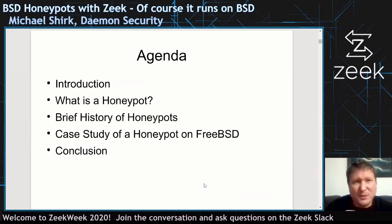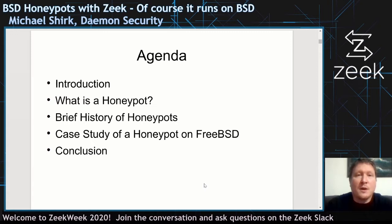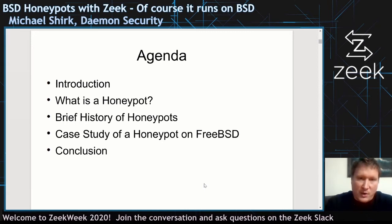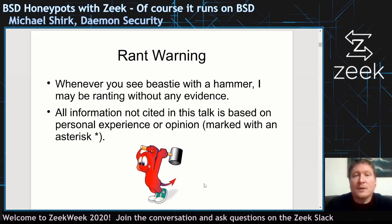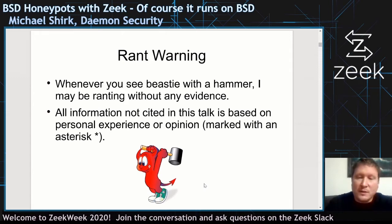I'd like to start off with a basic introduction, then work into what is a honeypot for those that maybe haven't heard that term before, a brief history of honeypots, and then what created this talk as far as my case study for setting up FreeBSD with a honeypot. My rant warning: if I have BSD with the hammer sitting next to a piece of information, I might be ranting without evidence. Everything else is cited, and if it's based on personal experience or opinion, I put an asterisk next to it.